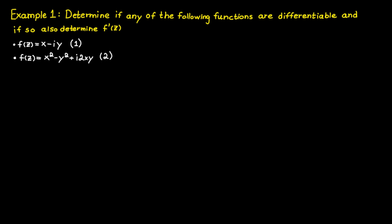In this example, I would like us to determine if any of the following functions are differentiable, and if so, also determine its derivative. The plan is to check if the partial derivatives of u and v are continuous and satisfy the Cauchy-Riemann equations in any region in the complex plane, since this would make the function differentiable in that region.